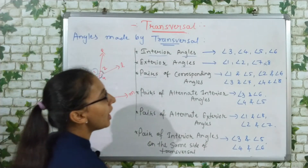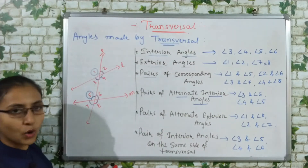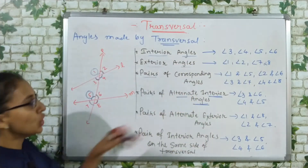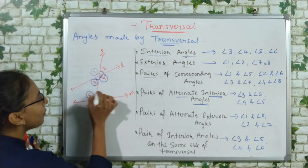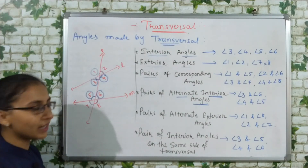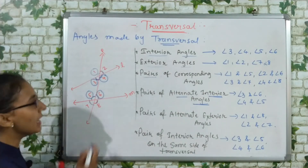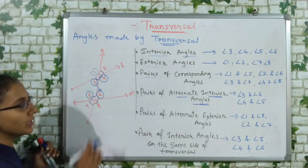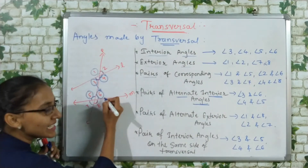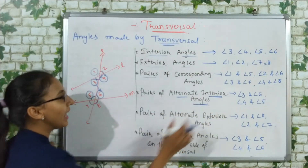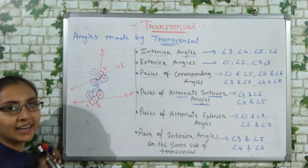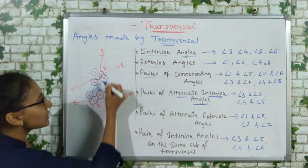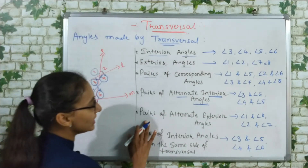Now the next type: pairs of alternate interior angles. We already know interior angles are 3, 4, 5, and 6. Alternate means the angle on the opposite side. So angle 3's alternate is angle 6, not angle 4. Therefore, 3 and 6 are alternate interior angles. Similarly, 4 and 5 are alternate interior angles. So the two pairs of alternate interior angles are: 3 & 6, and 4 & 5.